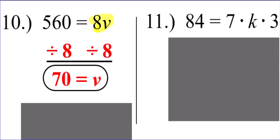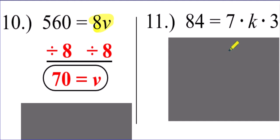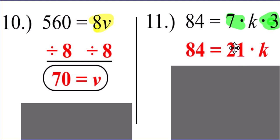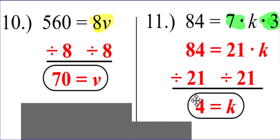Problem number 11 is similar to problems 5 and 8, because there are two numbers being multiplied to our variable — a 7 and a 3. Take 7 times 3, which is 21, bring down the K and the 84, then do the inverse of multiplying by 21 and divide by 21 to get K by itself, giving you the answer of 4. Ladies and gentlemen, that concludes our guided notes on equations with multiplication — when to use inverse operations and when not to. The purpose of this page was to get you ready for upcoming guided notes. Thank you for watching — we'll see you next time.